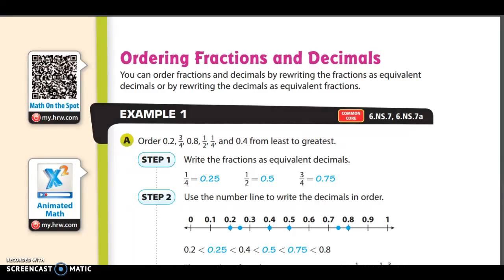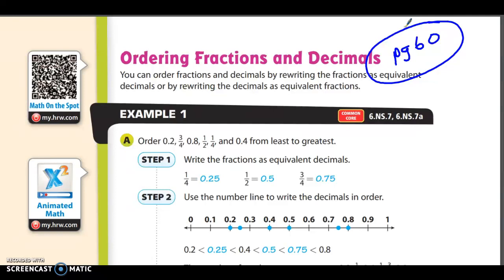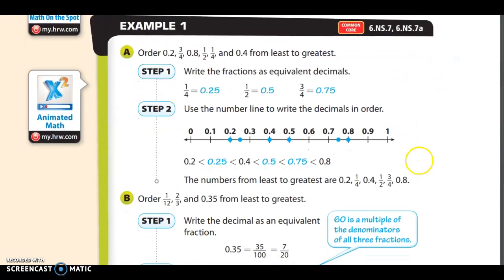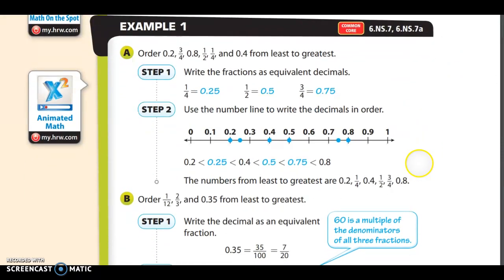We are on page 60. What page 60 is going to attempt to teach you is if we give you a big pile of rational numbers — some are fractions and some are decimals — we need to have a way and a strategy to put them in order from least to greatest. You can order fractions and decimals by rewriting the fractions as equivalent decimals or by rewriting the decimals as equivalent fractions.